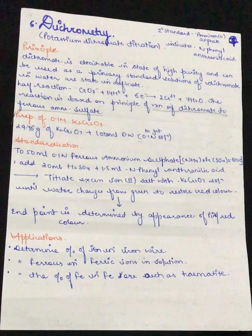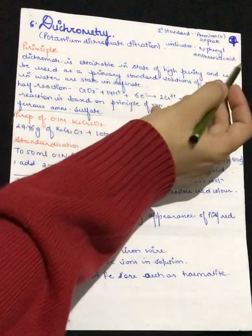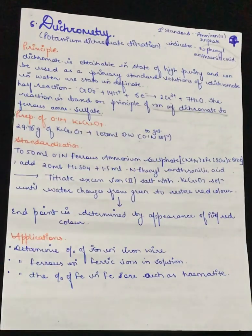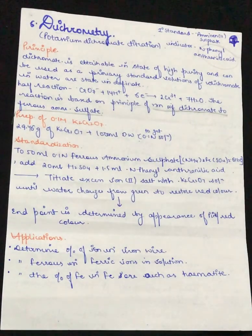We are reacting dichromate, that is potassium dichromate, with ferrous ammonium sulfate, and we will use N-phenyl anthranilic acid. These are three things that we need to remember primarily.